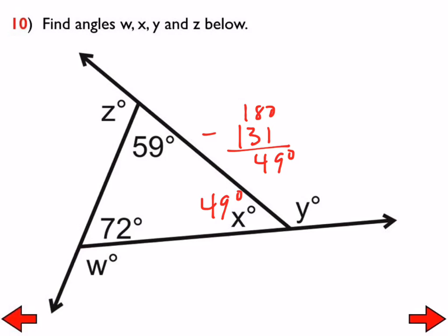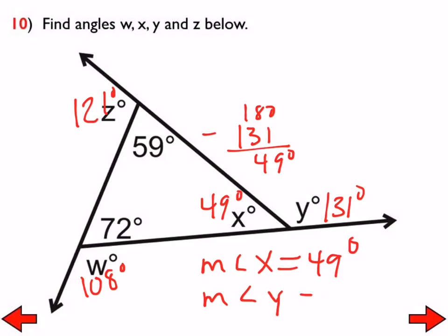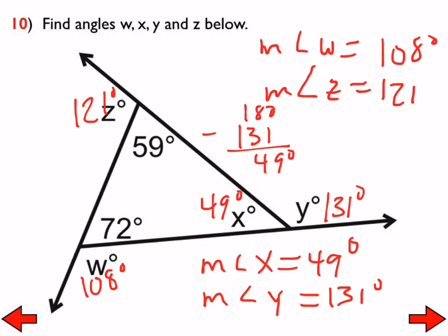I will rewrite that in a minute. Then I'll go with angle y. Angle y and angle x form a linear pair, so therefore angle y is 131 degrees. Angle w is the one I will do next. Angle w and the 72 degree angle form a linear pair, so angle w is 108 degrees. And then angle z and angle 59 are a linear pair, a different linear pair there, and so that would make that 121 degrees. So writing this the correct way, the measure of angle x is 49 degrees, didn't mean to write 490. The measure of angle y is 131 degrees, the measure of angle w is 108 degrees, and then the measure of angle z is 121 degrees.